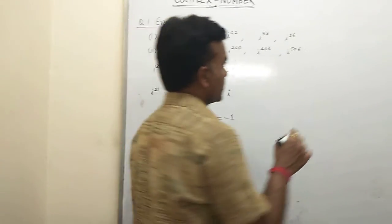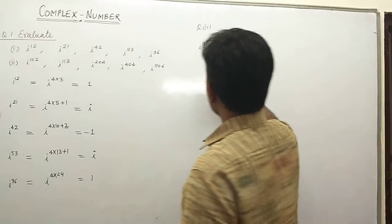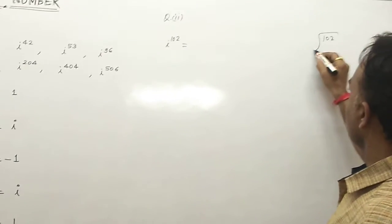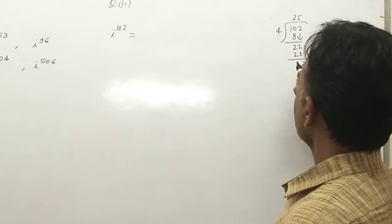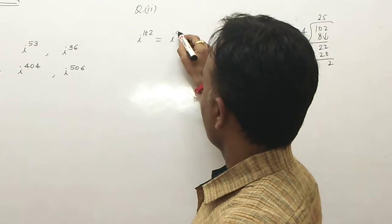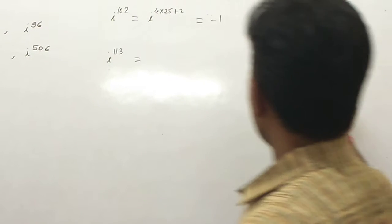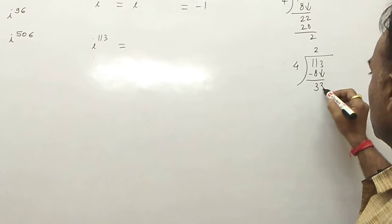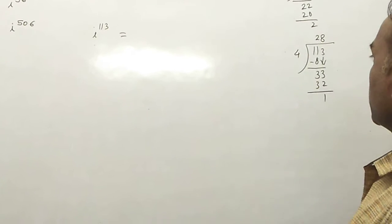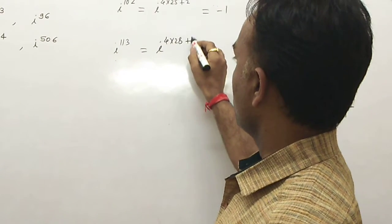For i^102: divide 102 by 4 — 4×25 = 100, remainder is 2, so answer is −1. For i^113: divide 113 by 4 — 4×28 = 112, remainder is 1, so answer is i.